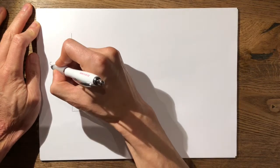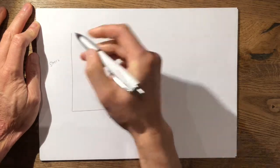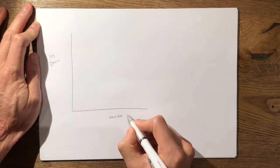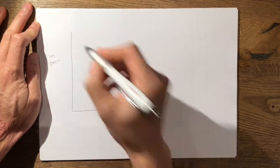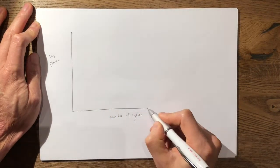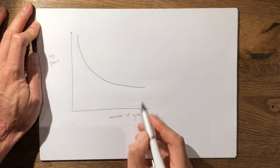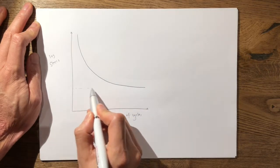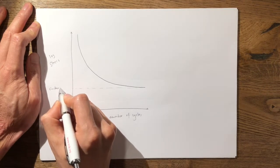which is the stress-number of cycles curve. On the y-axis it's the log of stress and here you have the number of cycles in millions of cycles. The SN curve takes a gentle curve like this but it plateaus, and where it plateaus is described as the endurance limit of the material.